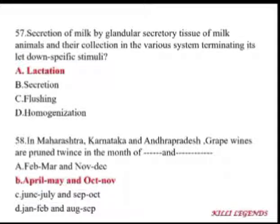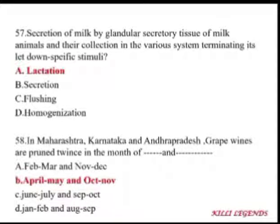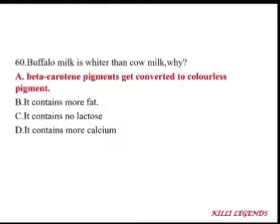In Maharashtra, Karnataka, and Andhra Pradesh, grape vines are pruned twice — in April and May, generally before the onset of the southwest monsoon (last week of May or first week of June). Pruning in May means lesser foliage, making pruning easier. After pruning, monsoon sprouts emerge and damage is minimized. October-November is another pruning period. Buffalo milk is whiter than cow milk.